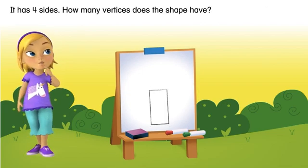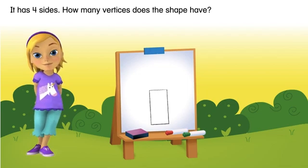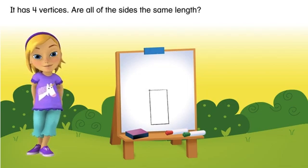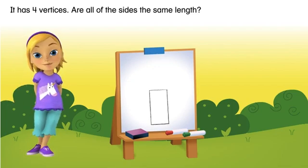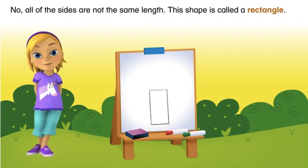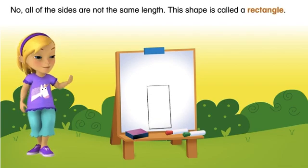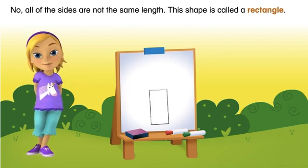How many vertices does the shape have? It has four vertices. Are all of the sides the same length? No, all of the sides are not the same length. This shape is called a rectangle.